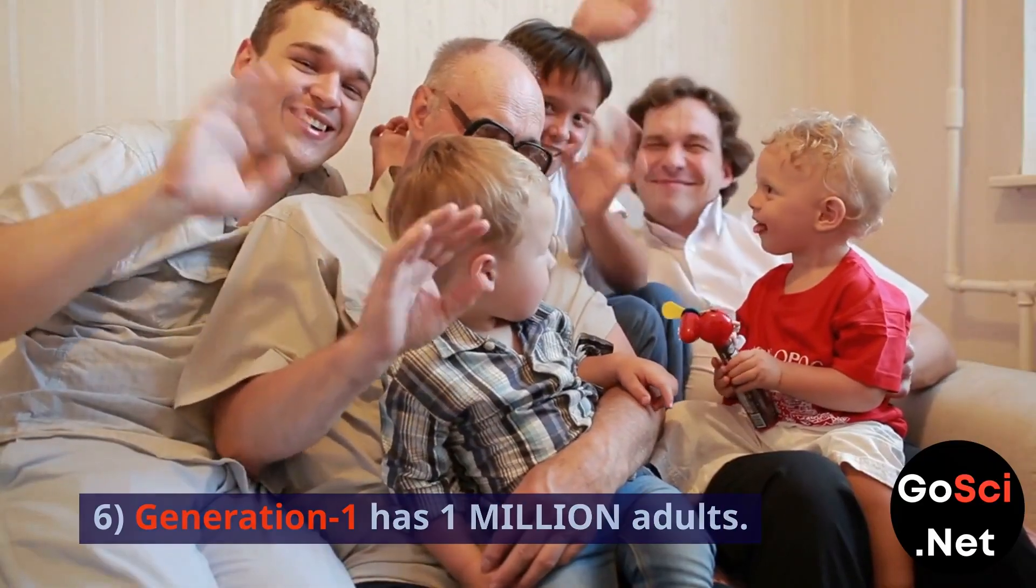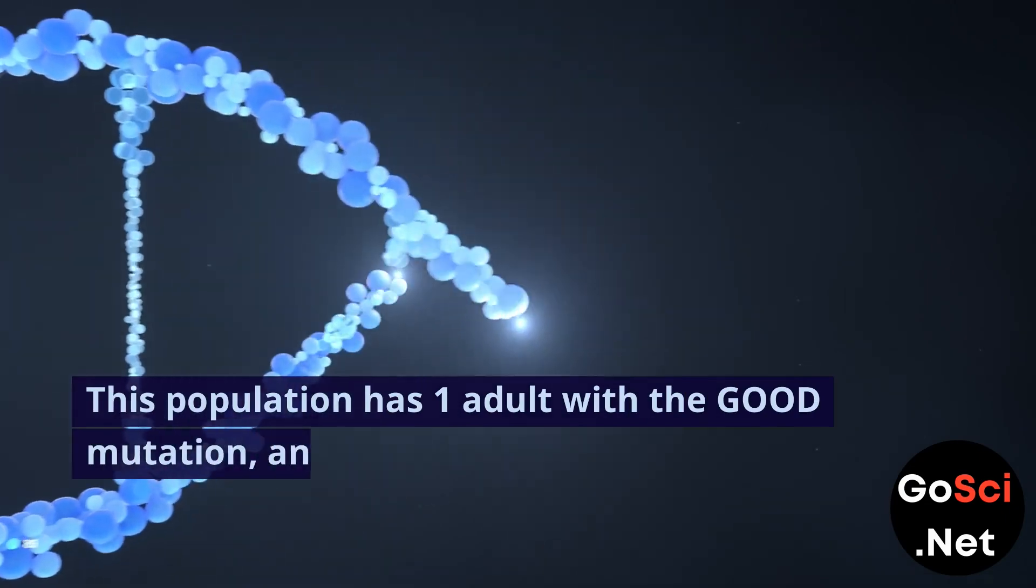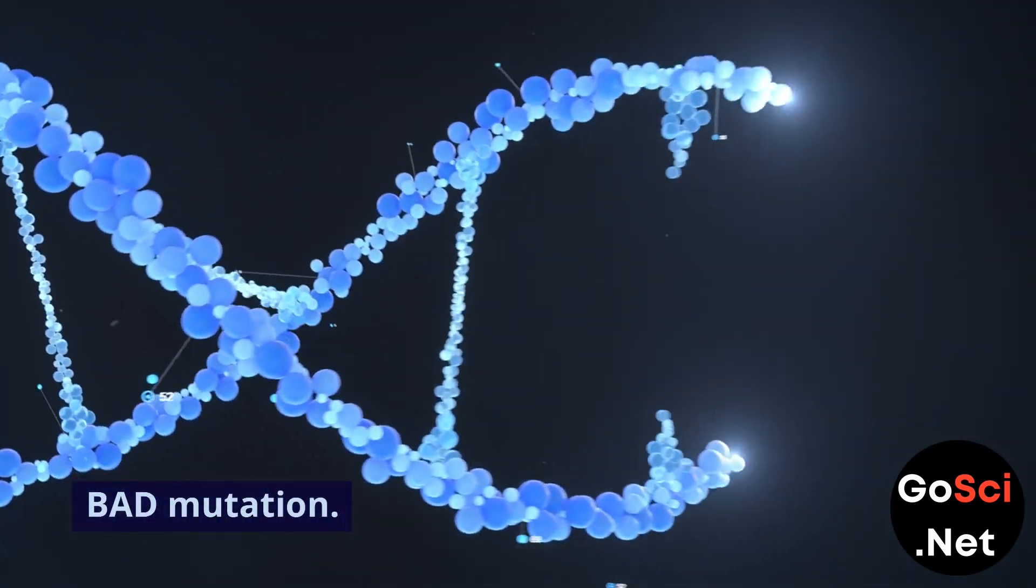Generation 1 has 1 million adults. This population has 1 adult with the good mutation, and the rest have the bad mutation.